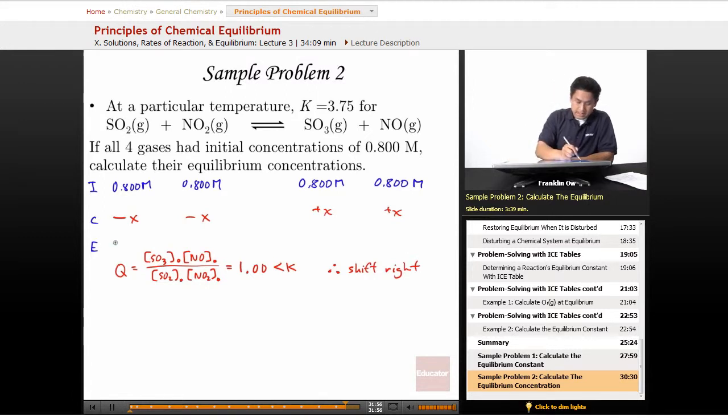And so we're going to get 0.800 minus X, 0.800 minus X. This is going to be 0.800 plus X. This is going to be 0.800 plus X.